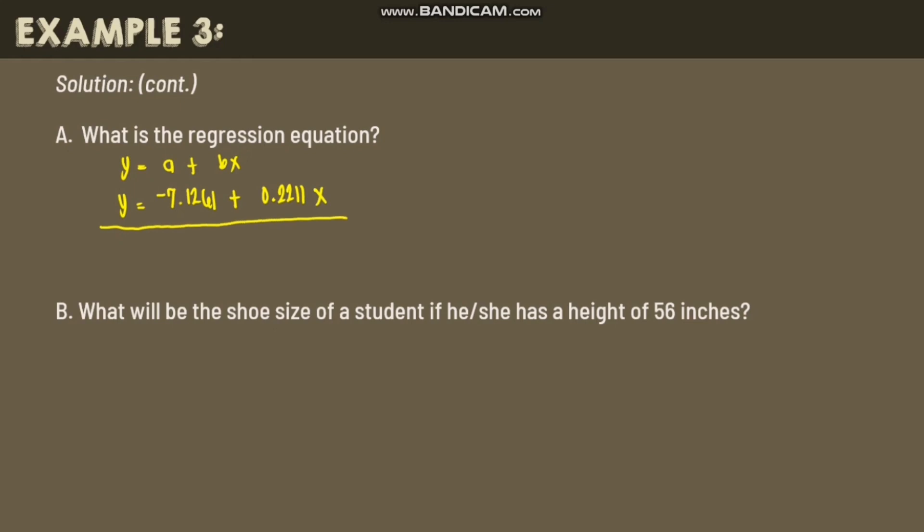Then to answer letter b, what will be the shoe size of a student if he or she has a height of 56 inches? So the shoe size is y. Height of the student is 56. So this is our x. So using the formula, we have y equals negative 7.1261 plus 0.2211 times 56.